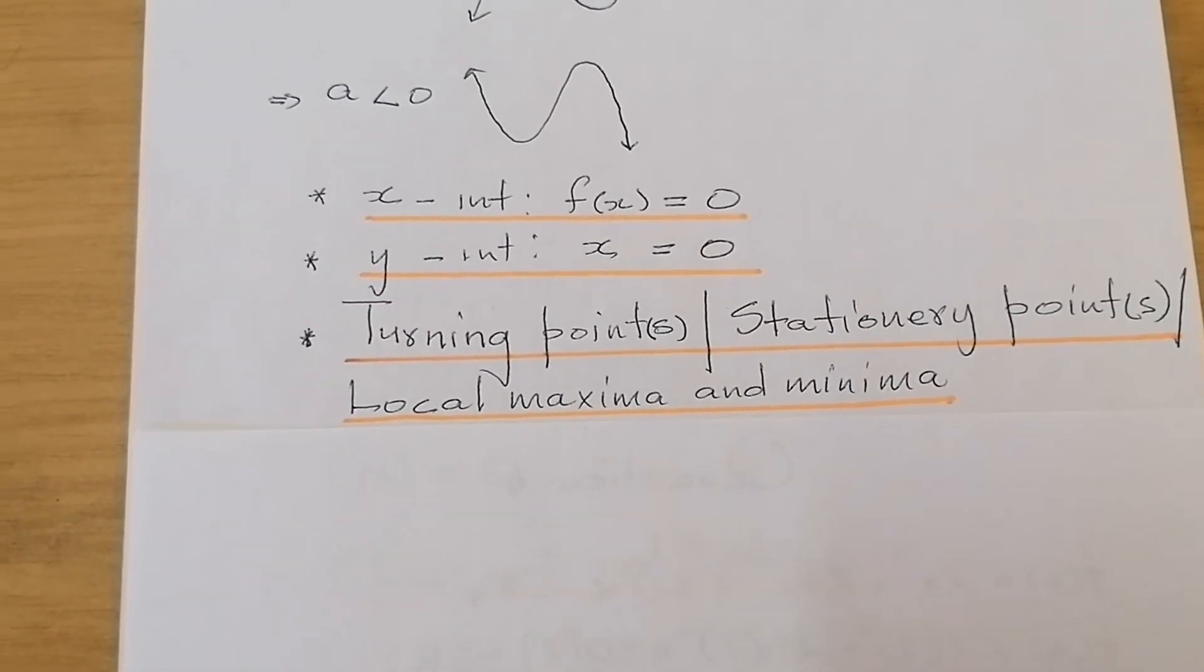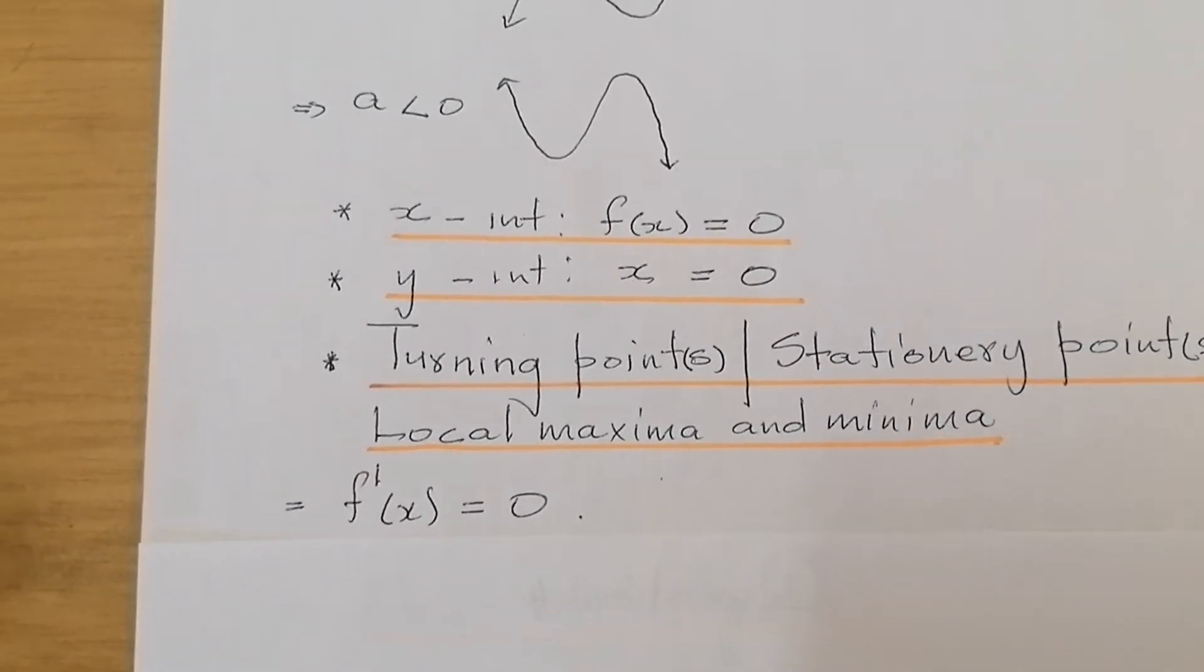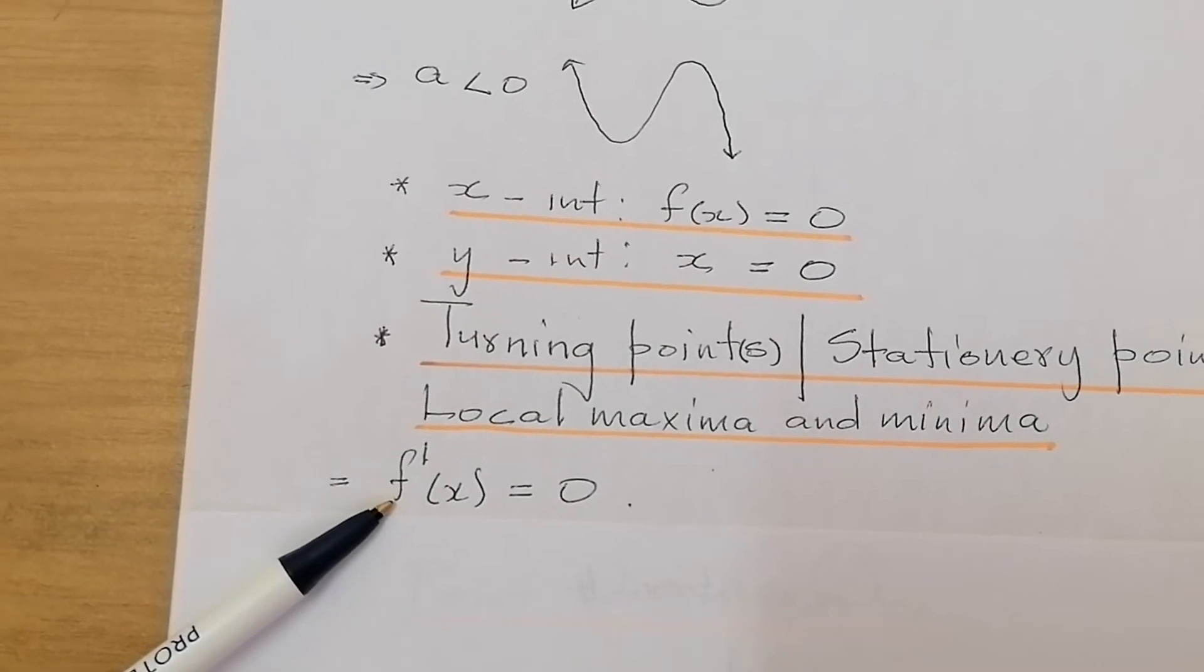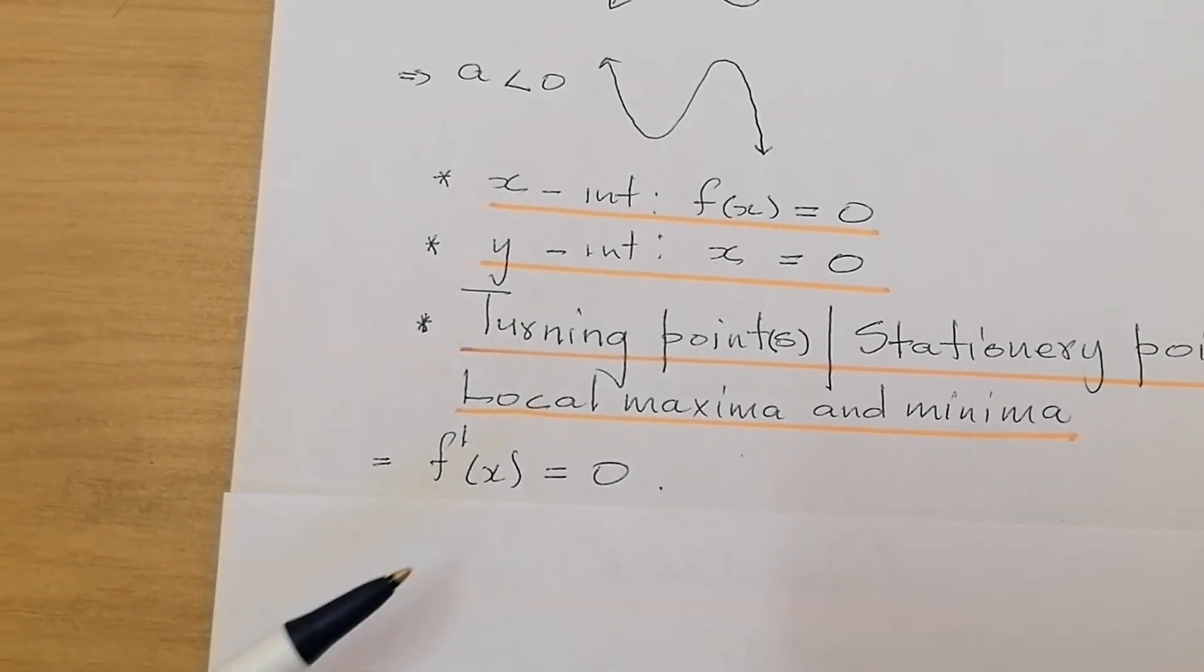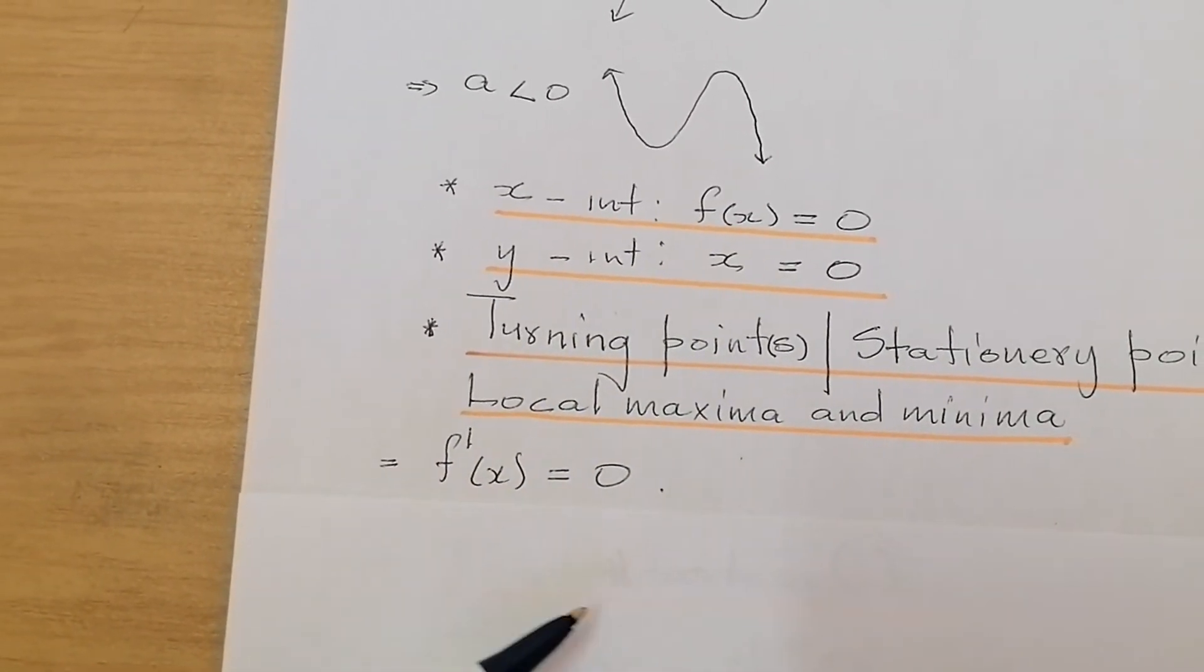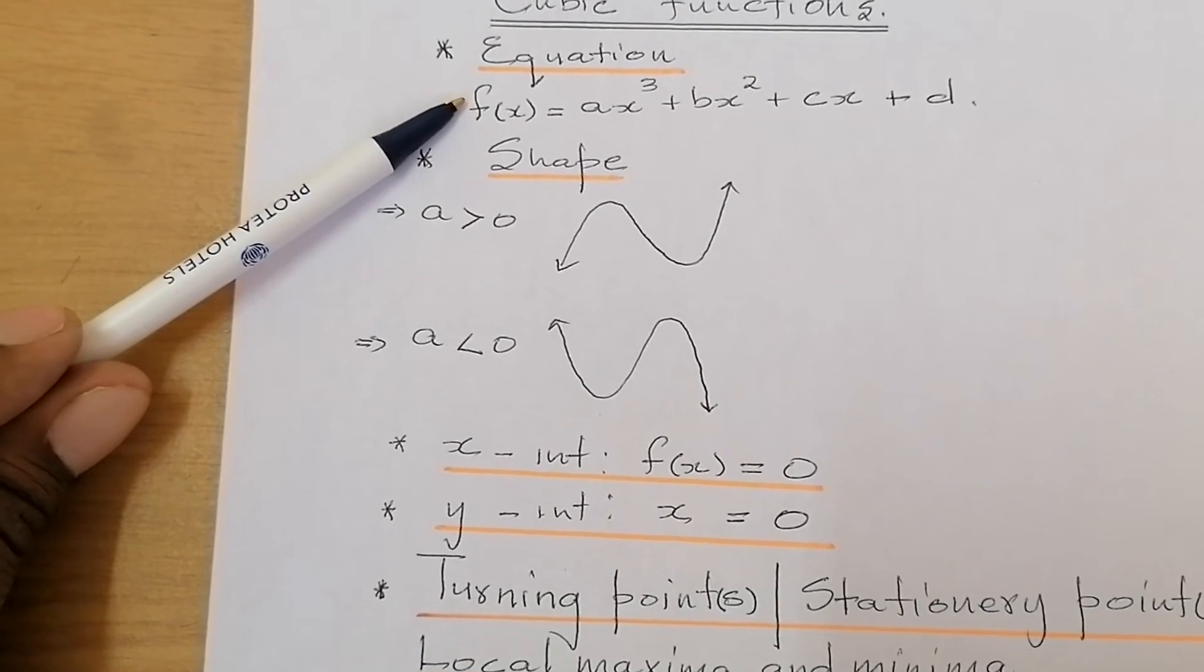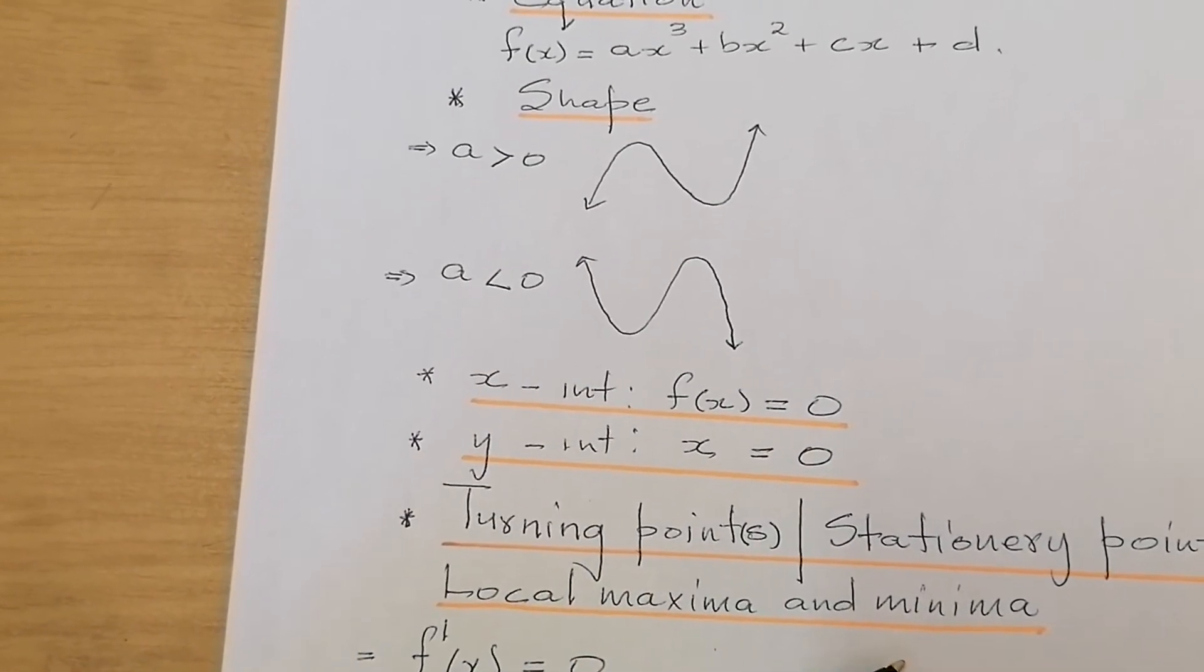Now, when we are looking for the turning points, what must we do? We differentiate the given equation of the function f(x). You differentiate that. Then you equate it to zero. The derivative of the function f with respect to x will be equal to zero. Then you solve for x. After solving for x, you take the x values that you have, for which it would be x values of the turning points. You substitute them to the original given equation and they will give you the corresponding y values of the turning points or stationary points or local minima or local maxima.